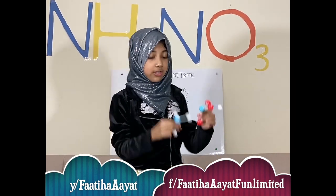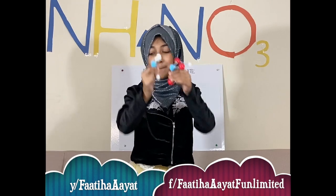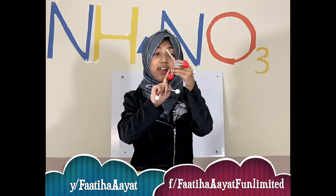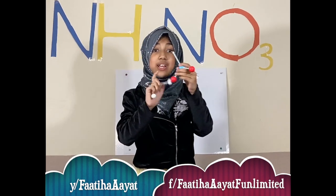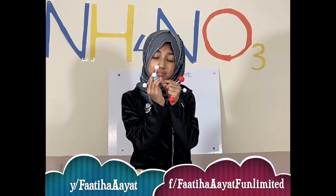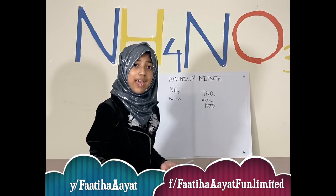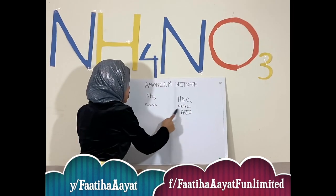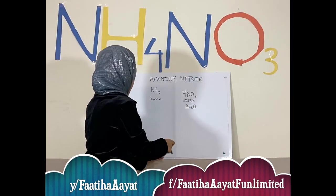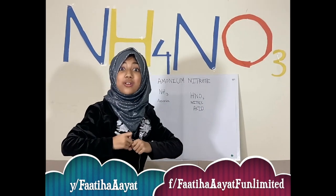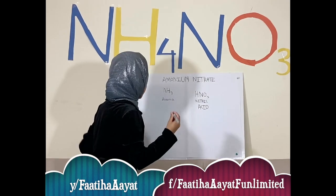Now I will show you what ammonium nitrate looks like if we combine them. So I'm going to combine them. This is the nitric acid, and this is the ammonia. Let's combine them. We have to combine these two molecules to make the ammonium nitrate.